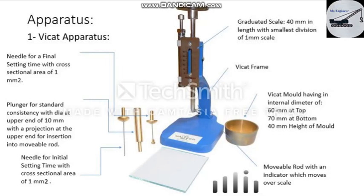The apparatus used for finding standard consistency of cement paste is the Vicat apparatus, which includes a Vicat frame and a graduated scale of 50 mm length with smallest division of 1 mm. We have a Vicat mold having an internal diameter of 60 mm at the top and 70 mm at the bottom, with a height of 40 mm. We also have a set of plungers: one for finding the initial setting time of cement and another plunger for standard consistency with a diameter of 10 mm at the upper end.